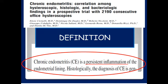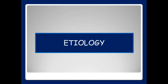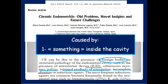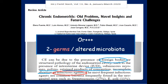Another term encountered in old literature is 'persistent inflammation.' Regarding etiology, chronic endometritis is either caused by something inside the cavity — like a foreign body, an IUD, a polyp, retained products of conception, etc. — in which case the cause is obvious and visually detectable. Or, in all the other cases, it is caused by germs, or better yet, altered microbiota.